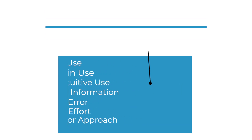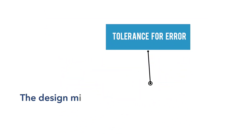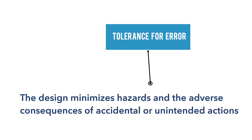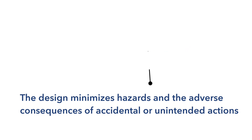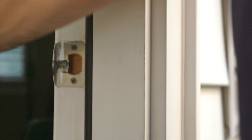Tolerance for error is the fifth universal design principle. For a design to fall under this principle, it must minimize hazards and the adverse consequences of accidental or unintended actions. A double-sided key is an example of tolerance for error.